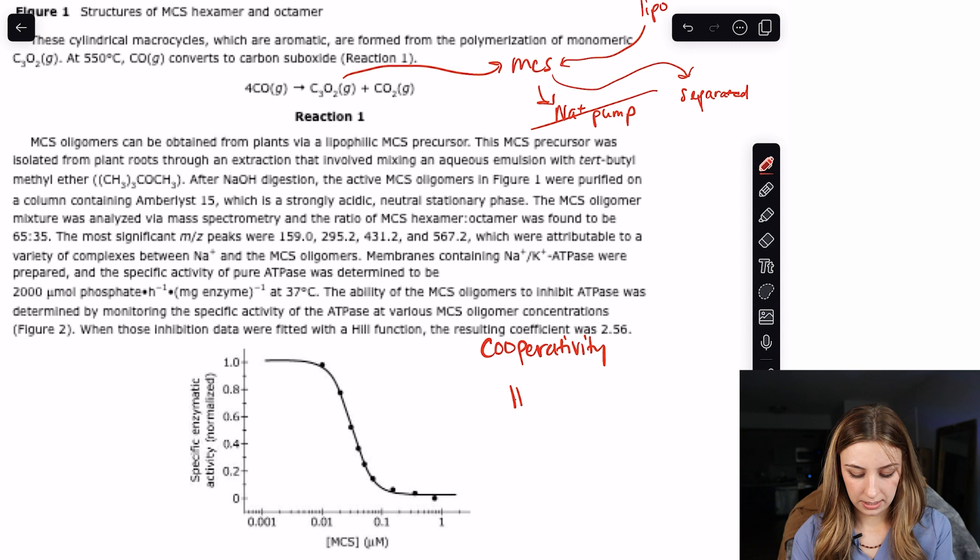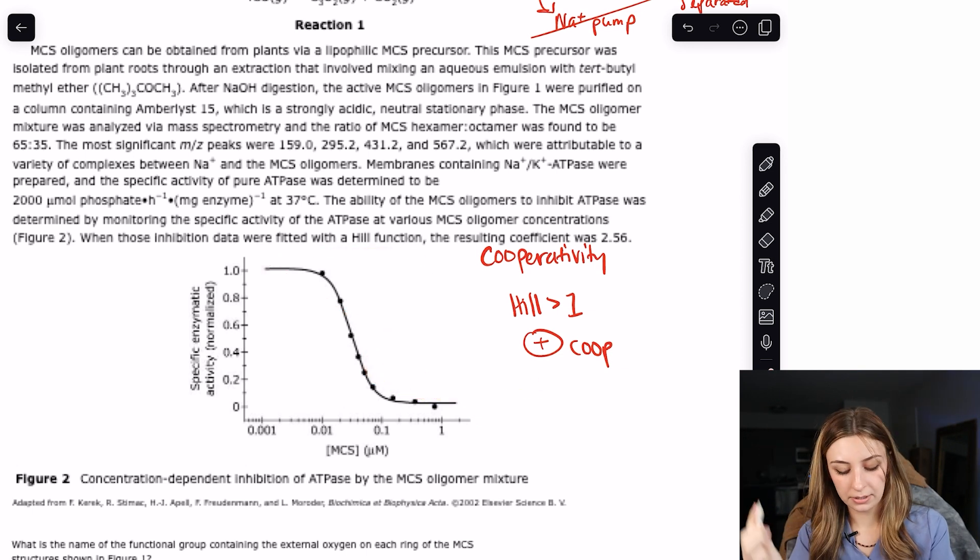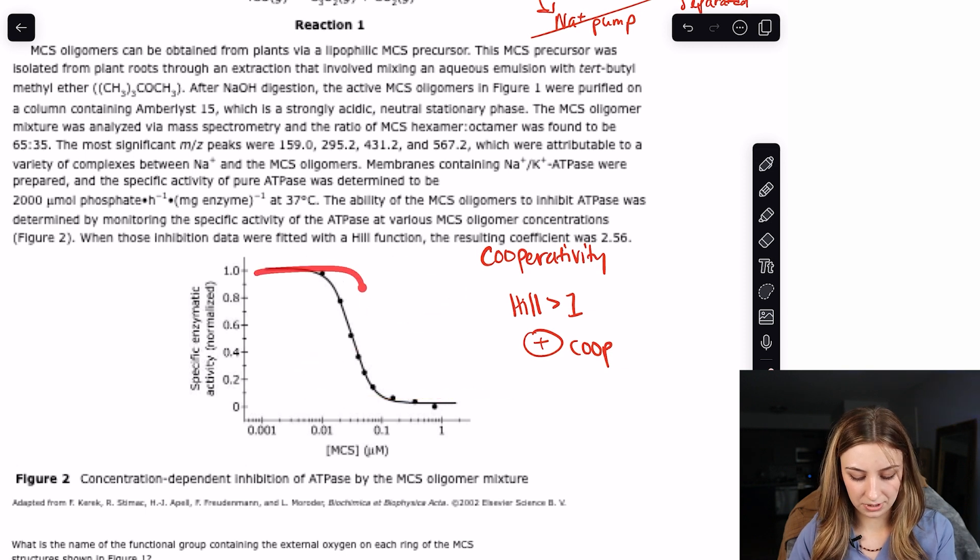The ability of the MCS oligomers to inhibit ATPase was determined by monitoring the specific activity of the ATPase at various MCS oligomer concentrations. When those inhibition data were fitted with the Hill function, the resulting coefficient was 2.56. Hill coefficient. What is that? That's cooperativity. So I'm already thinking that that's a Hill greater than one, and so that's positive cooperativity. Always read the figure caption first. Concentration dependent inhibition of ATPase by the MCS oligomer mixture. Then read the axes.